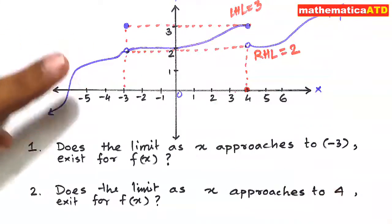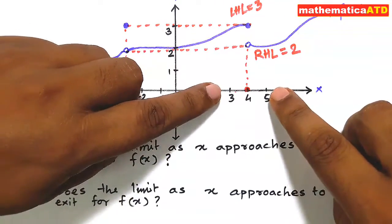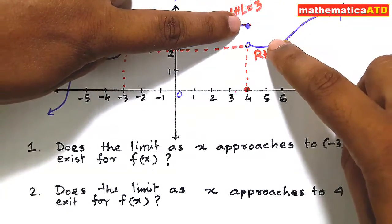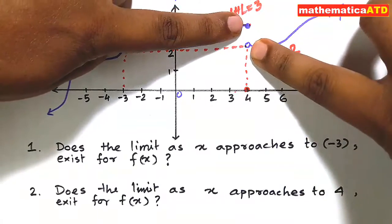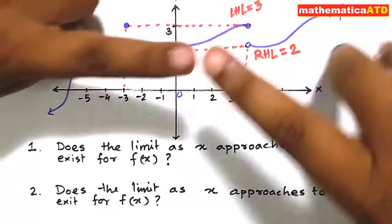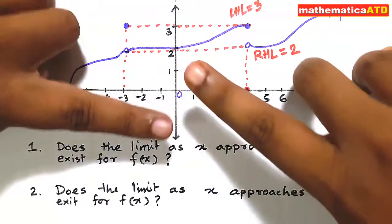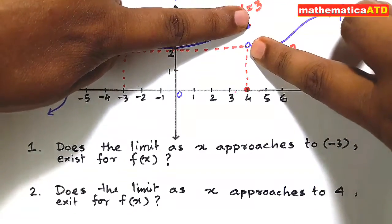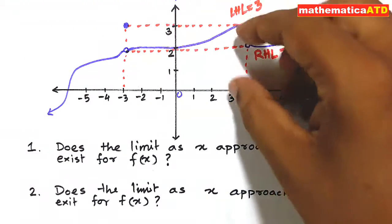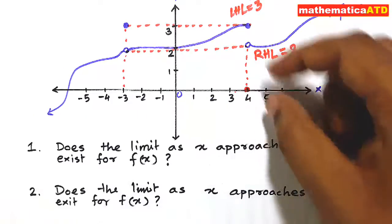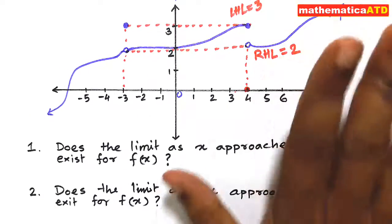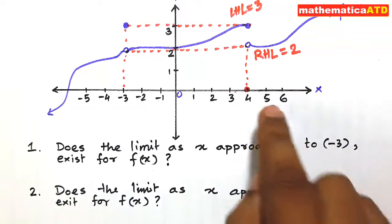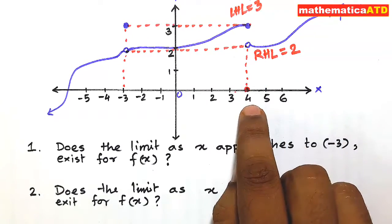At x = 4, when approaching from left and right, the graph proceeds to different ordinate values — the fingers are not face to face and will not meet. So the function has no exact limiting value at x = 4. Since LHL ≠ RHL, the limit does not exist at x = 4.